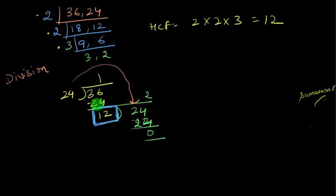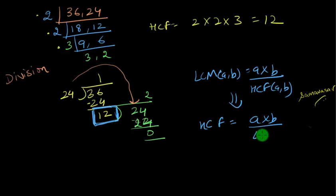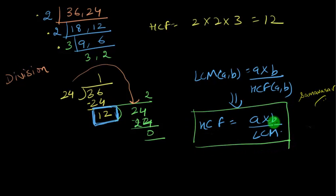I can also find the HCF using the LCM. As I told you, LCM of A and B = (A × B) ÷ HCF of A and B. As a corollary, HCF = (A × B) ÷ LCM. So if two numbers are given and I know the LCM, or if any of these variables is missing, I can plug it into this equation and find the answer.